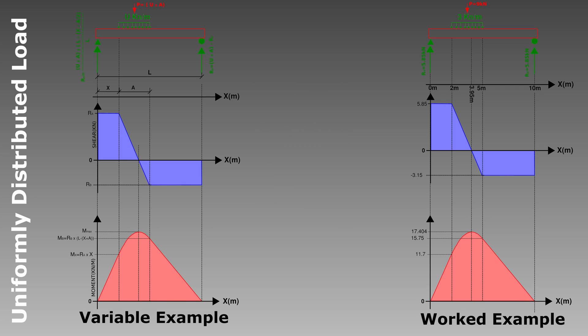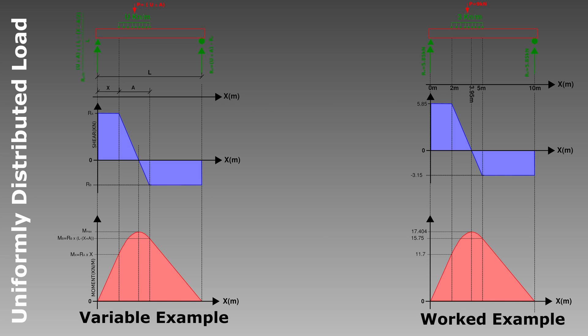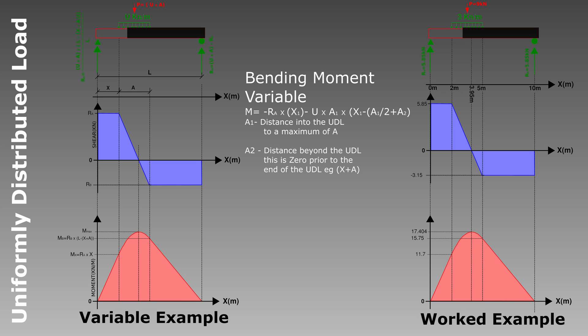For the bending moment, a section cut at the start of the UDL leads back to the same simple equation as for point loads — it's a straight line up to that point, equal to RA times the distance away. Once inside the UDL, we need to counterbalance the bending moment by the load imparted from the UDL in the section cut. The easier way to do this is to use the relationship between bending moments and shear forces.